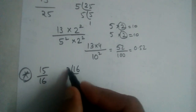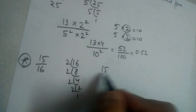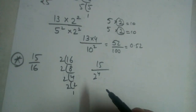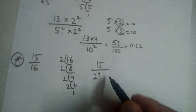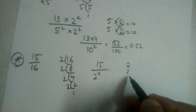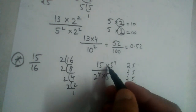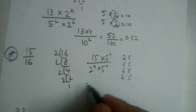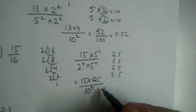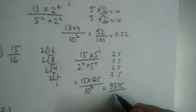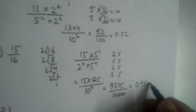For 15/16: prime factors of 16 give 2⁴. To make 10⁴, we need 5 four times, so multiply numerator and denominator by 5⁴ = 625. Then 15 × 625 = 9375, divided by 10⁴ (10,000), giving 0.9375. We need 4 decimal places since the denominator is 10 power 4.